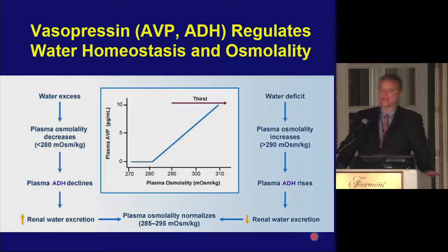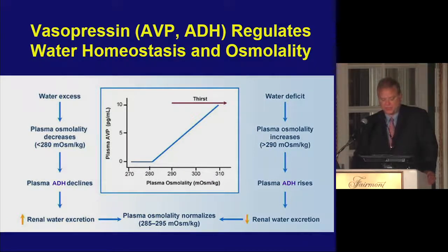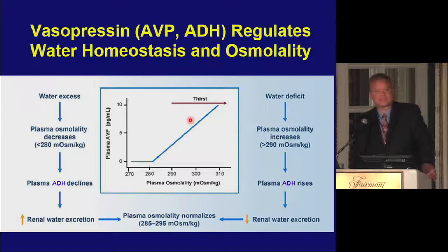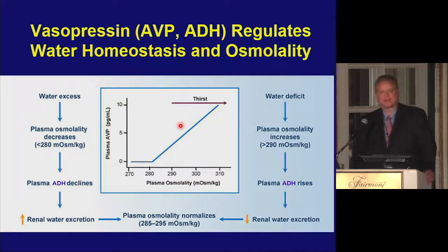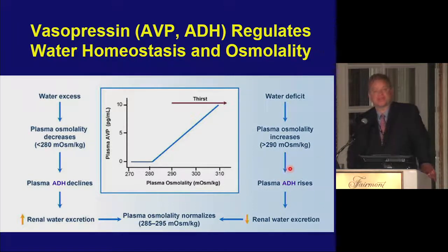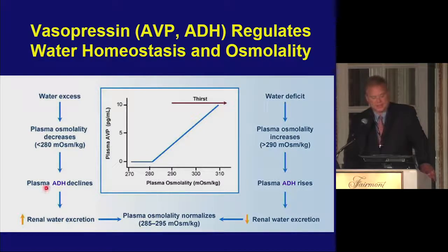It's important to go through the basic physiology of vasopressin and thirst. As you increase plasma osmolality, thirst increases over the same range in osmolality as does vasopressin. You're taught in textbooks that it's shifted to the right a little bit, but actually it's not. In the setting of water deficit, as plasma osmolality increases, plasma vasopressin, or ADH, rises — that reduces renal water excretion and normalizes osmolality.